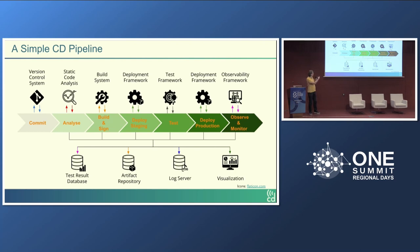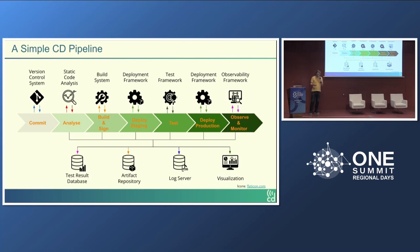Further along there are test frameworks, deployment to staging and production, and even after production there is observability and monitoring, which is still part of the entire pipeline. All these different steps and tools produce output: test results can go into a database, you can have artifact repositories where all software packages are stored, log servers, and other kinds of artifacts. It's also typically very useful to have visualization tools to visualize the entire workflow.